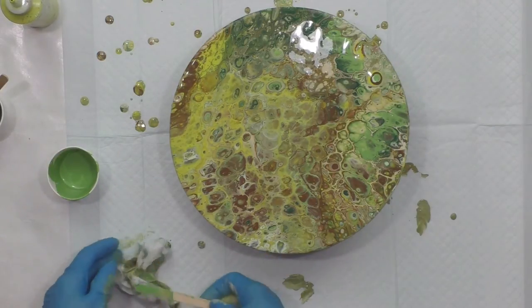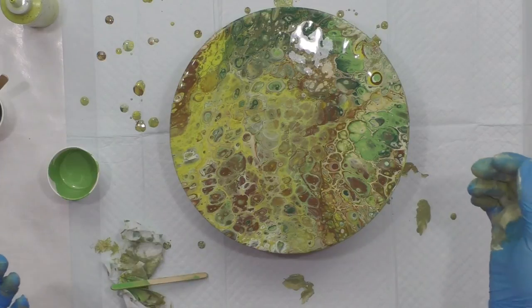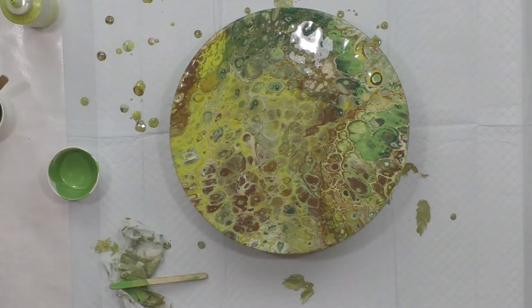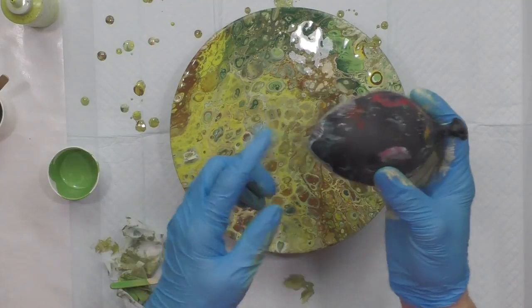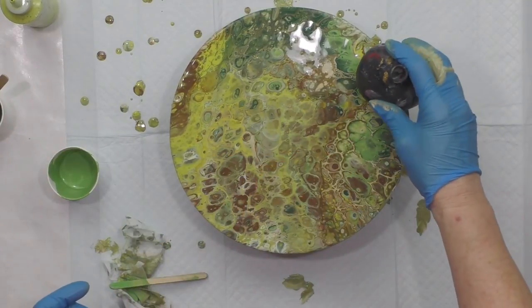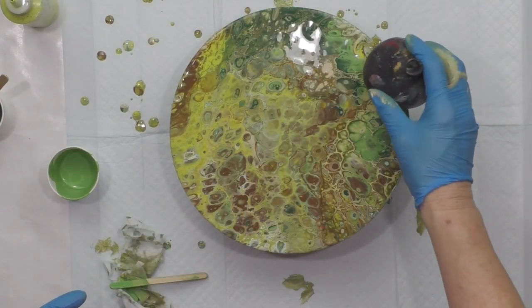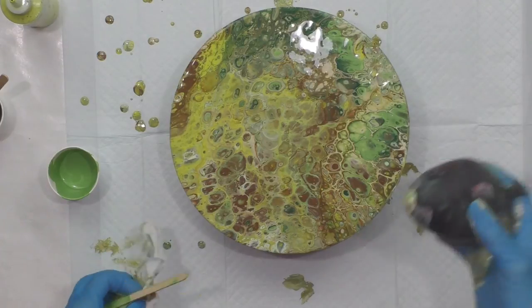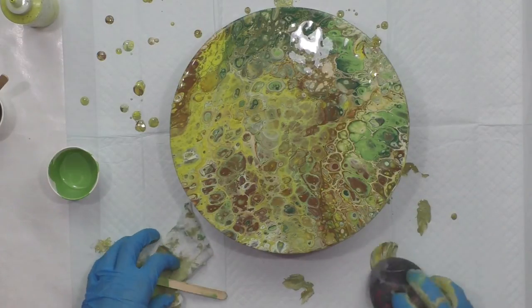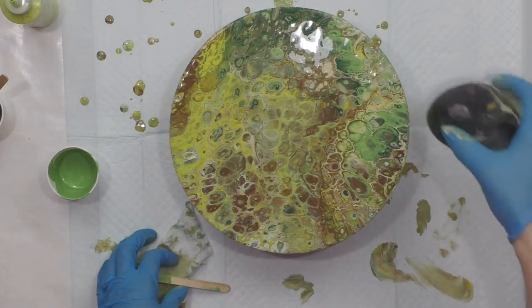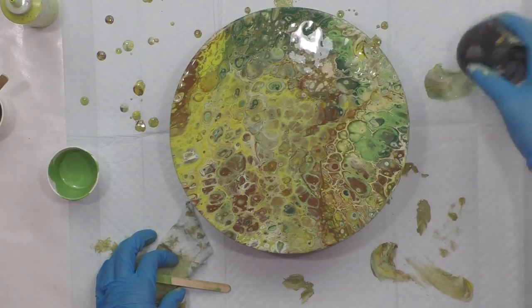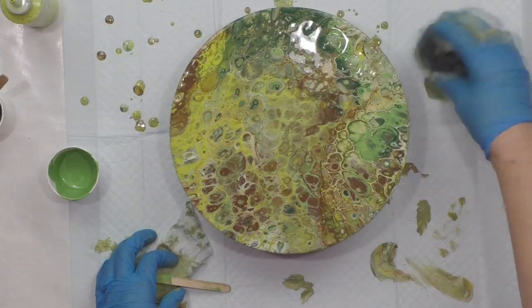You could totally take something rounded. Like this is a deflated balloon, it's got a little point. I could take that and just dip it, pick it back up. And that'll kind of intermingle some color there.